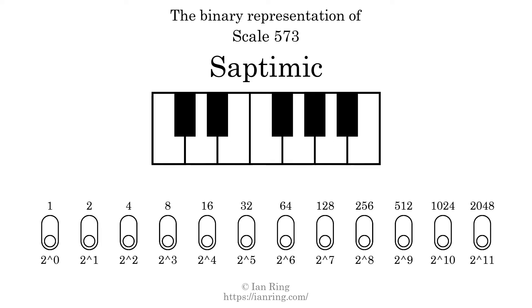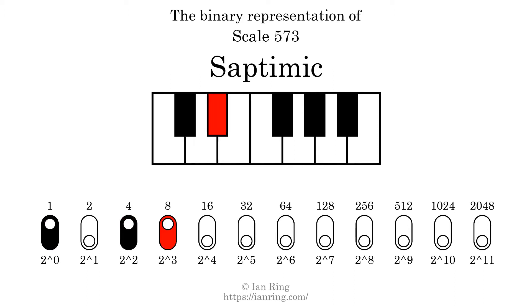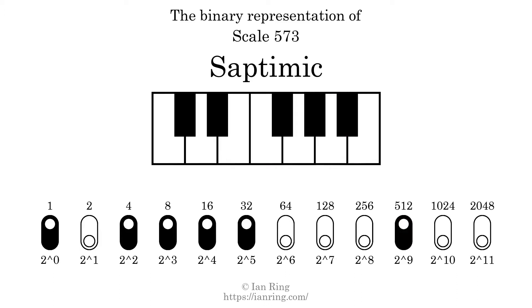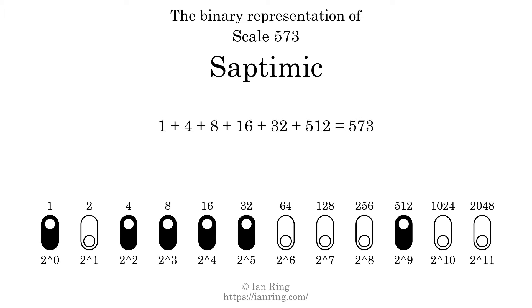The binary representation of this scale is determined by mapping tones of the scale to binary digits. Each binary digit represents a power of 2. To get the scale number, we add the powers of 2 together. The powers of 2 that are present in the scale, all added together, equals 573. That is why the scale number, in decimal, is 573.